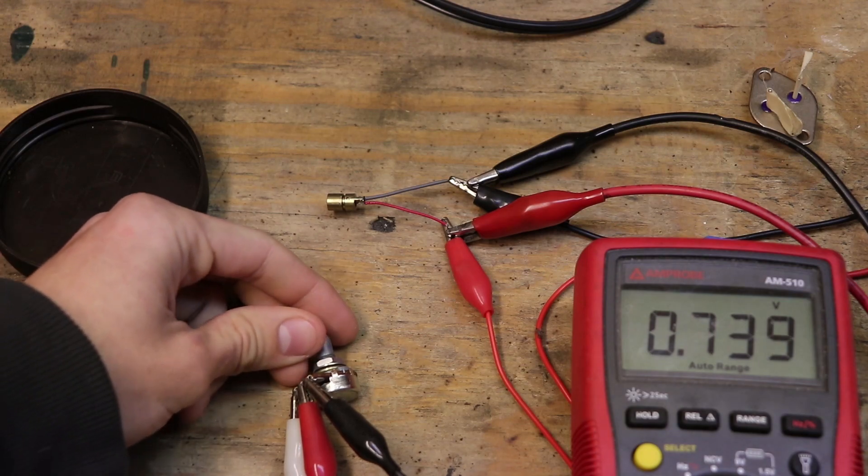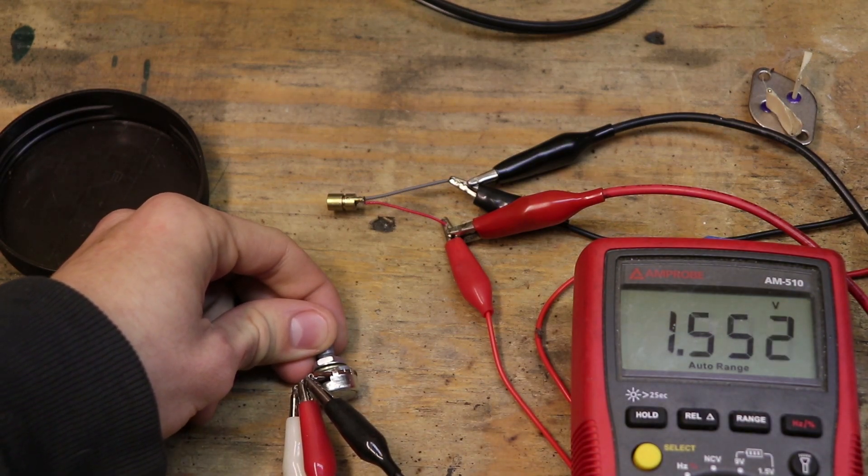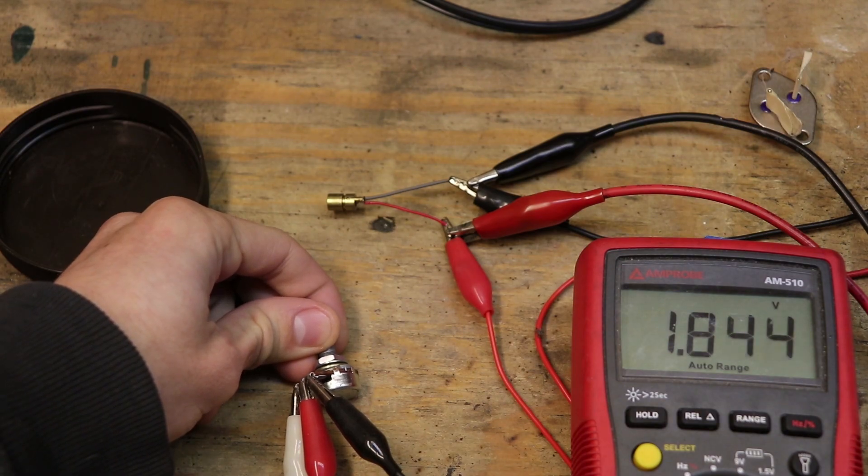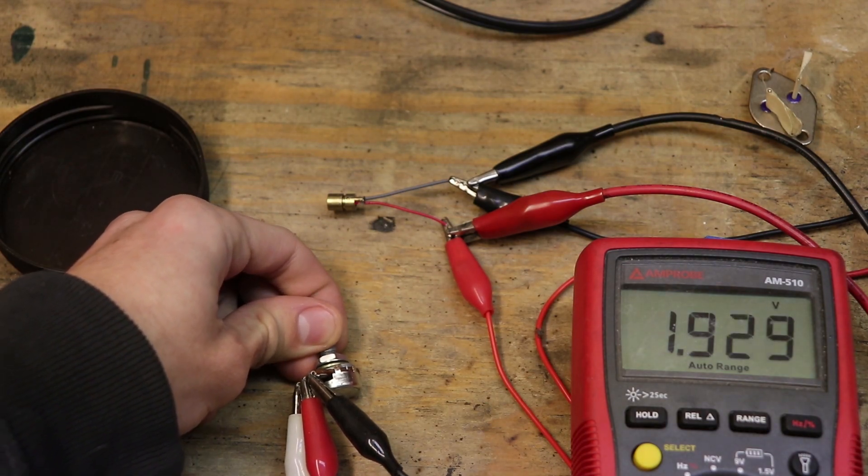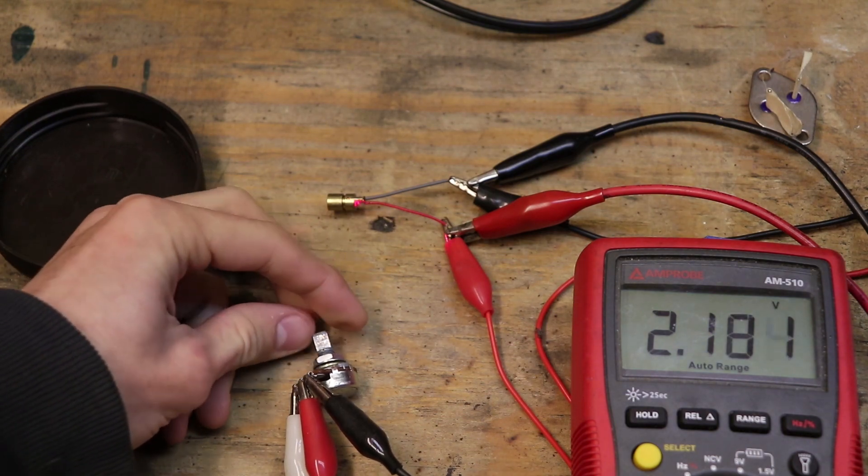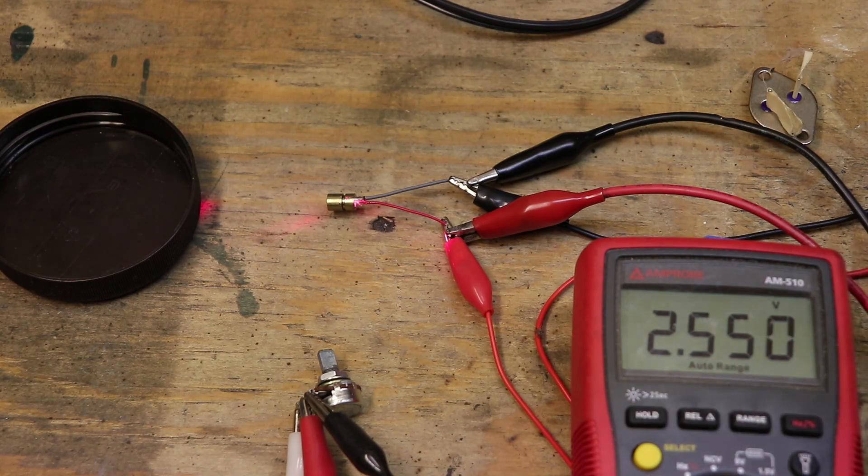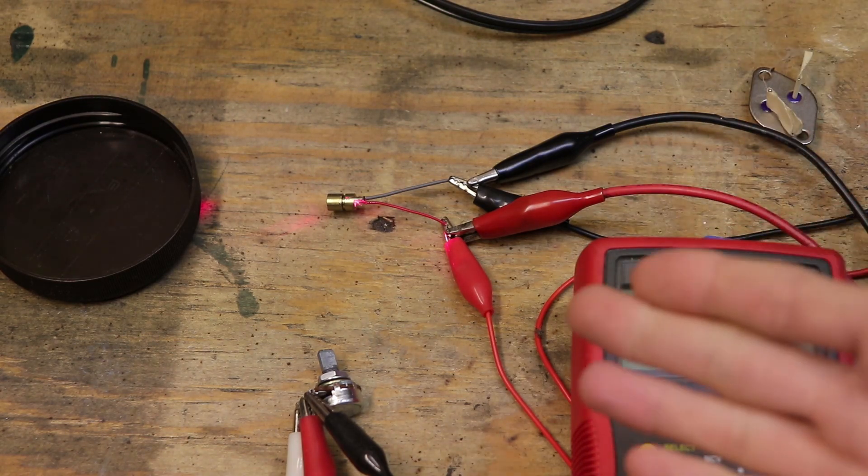And we can slowly turn it up, turn up the voltage, and we know that once we reach like about 3 volts then we have 300 milliamps. So there we go, we're at 2.5 volts and the laser is fully powered.